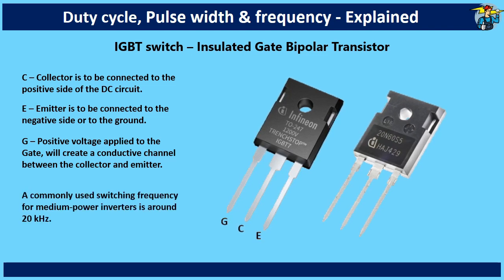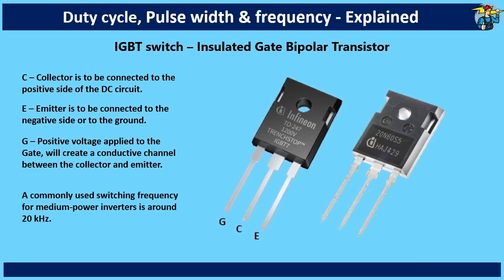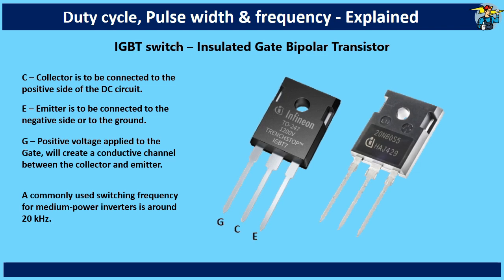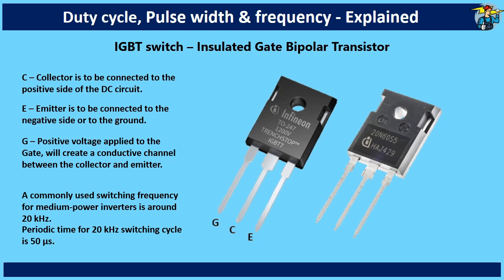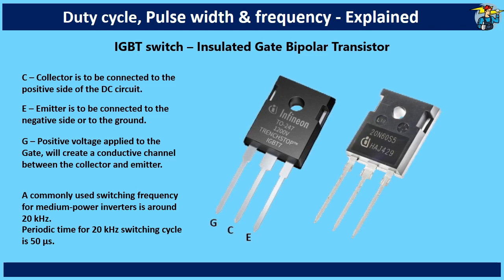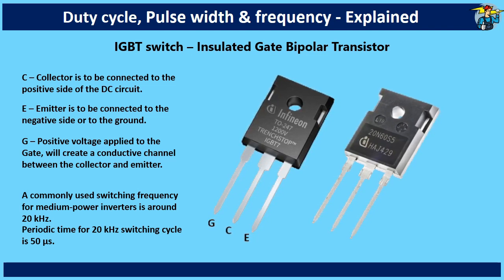A commonly used switching frequency for medium power inverters is 20 kilohertz. Periodic time for 20 kilohertz switching cycle is 50 microseconds, and is effectively achievable with these type of IGBT switches.